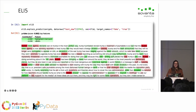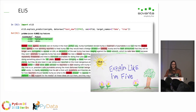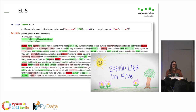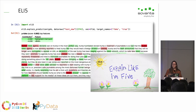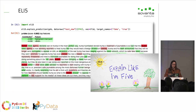Then there is ELI5, which stands for 'Explain Like I'm Five.' It works in a similar way and shows the contribution each word has to a certain prediction. It works nicely out of the box for scikit-learn pipelines. It's not completely model-agnostic, but you can use it with different scikit-learn algorithms, and it takes the preprocessing into account — so it works well if your setup meets its requirements.